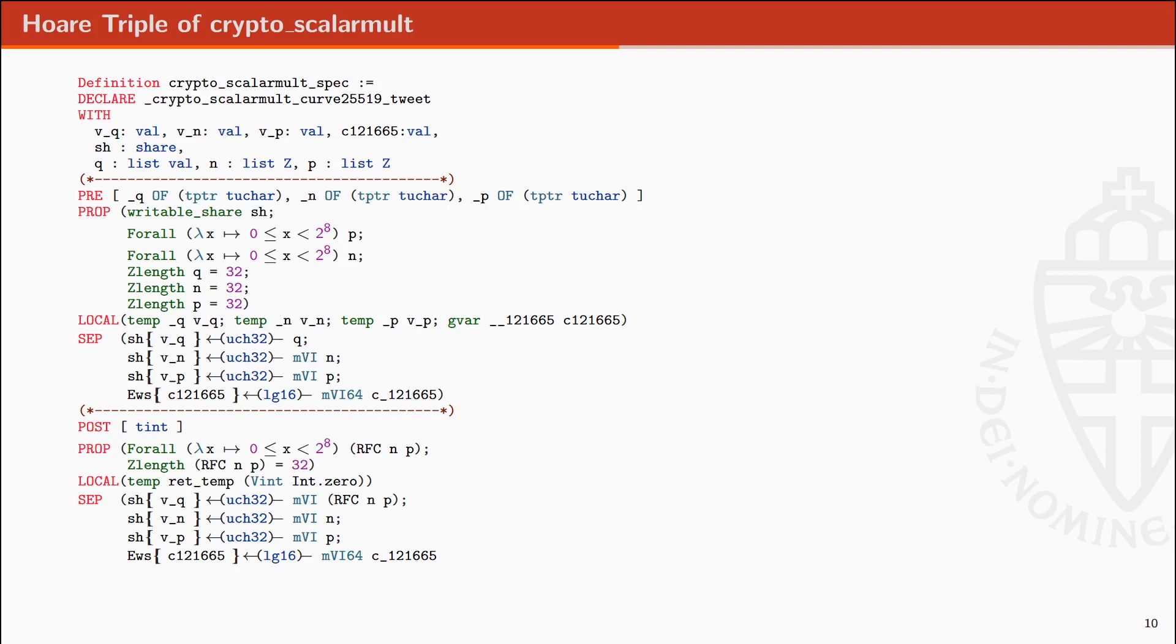In the postcondition, we specify the new values of N, P, and Q as a result of the computation done by crypto_scalarmult, the X25519 function in TweetNaCl. The pointer Q is mapped to a list of 32 bytes representing the result of the RFC function, or a formalization of RFC 7748.